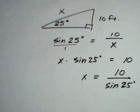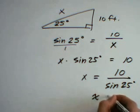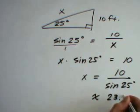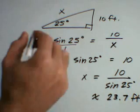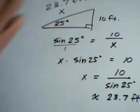Now this you can put into the calculator, and you'll get approximately 23.7 feet. So our missing side is about 23.7 feet.